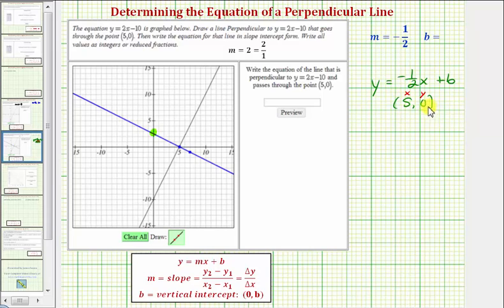So performing the substitution, we would have 0 equals negative one-half times x, which is 5, which I'll write as five over one, plus b. So we have 0 equals negative five-halves plus b.